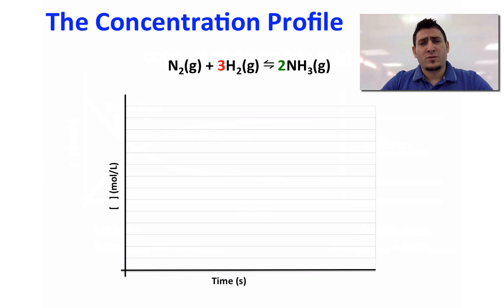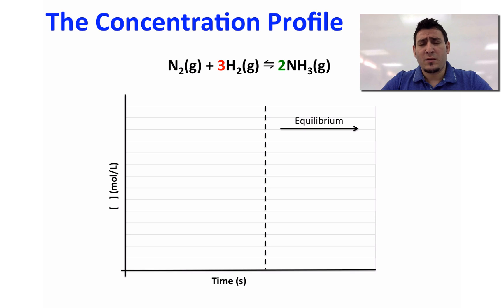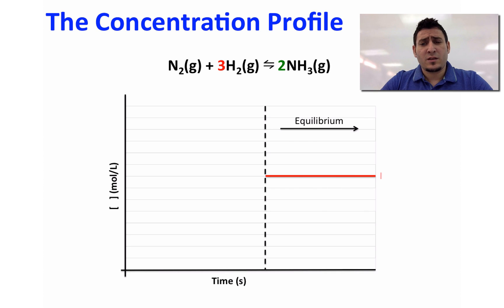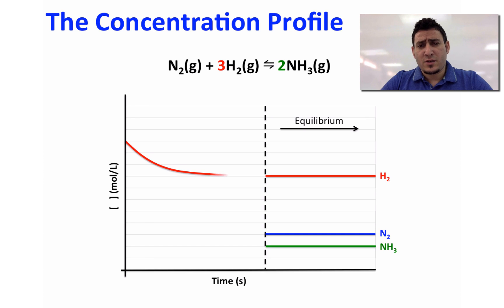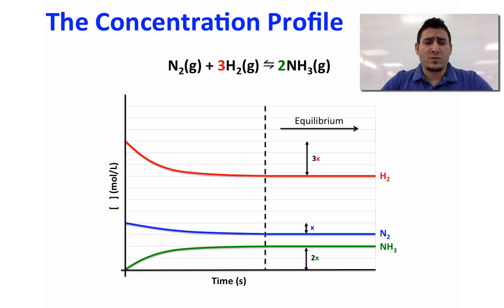How can we draw a concentration profile for this reaction? The first thing to do is to choose a time at which equilibrium will happen — I will represent it by a dashed line. Next, draw your equilibrium concentrations as straight lines starting from the dashed line, because after equilibrium the concentrations will not change. After that, connect the initial concentrations to these lines to get the resulting curve.